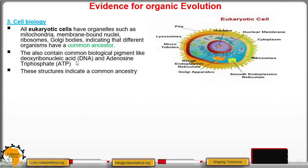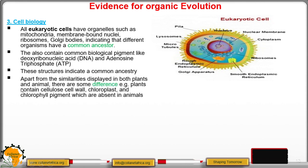These chemical substances are present in all eukaryotic cells together with these organelles, indicating that they have a common ancestry. Apart from the similarities displayed in both plants and animals, there are some differences. For example, plant cells contain a cellulose cell wall, chloroplast, and chlorophyll pigment, which are absent in animal cells. Chloroplast is the organelle which carries out photosynthesis, or making food for the plant.